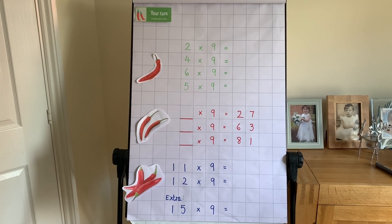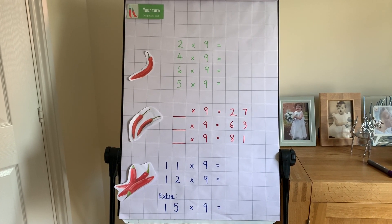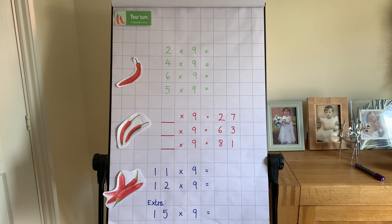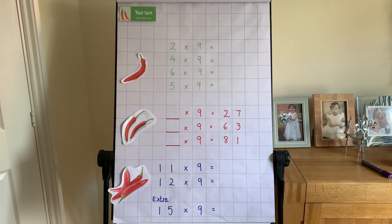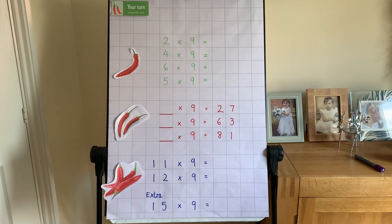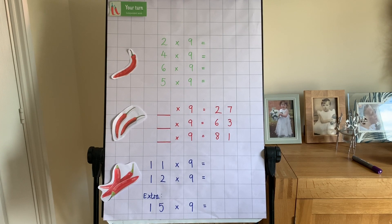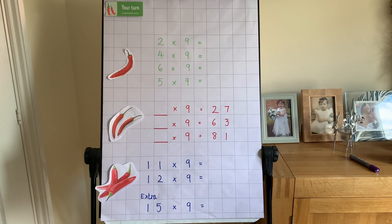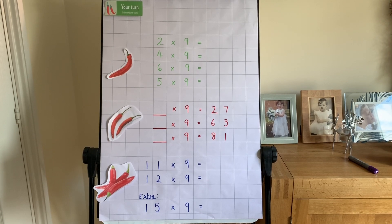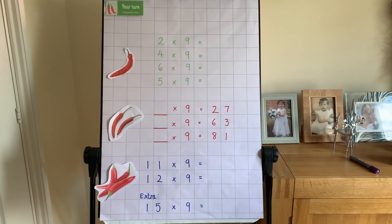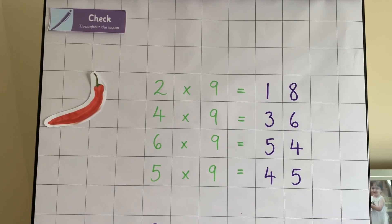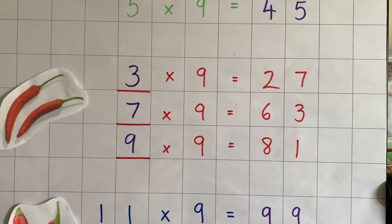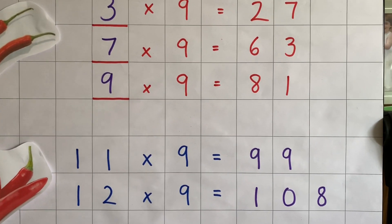Here are your chili challenges linked to today's session. Chili ones: have a look at working out those calculations — try to use the counting stick so the facts are in your brain rather than counting on in multiples. Chili twos: have a go at those calculations with missing numbers at the beginning. Chili threes: have a go at 11 times 9 and 12 times 9, since we should know all our facts up to 12 times 12. Here are the answers to chili one, chili two, and chili three.